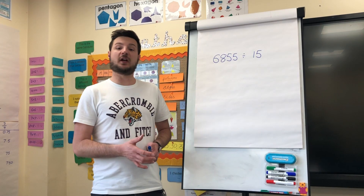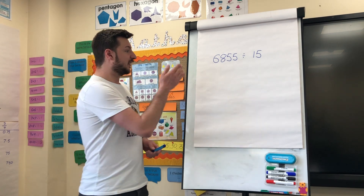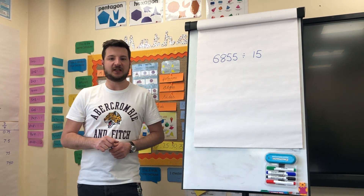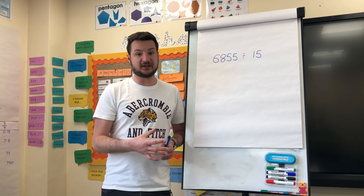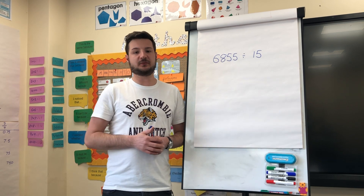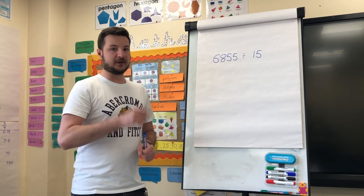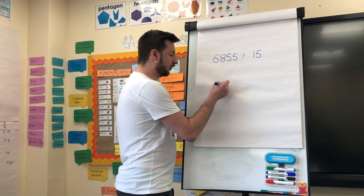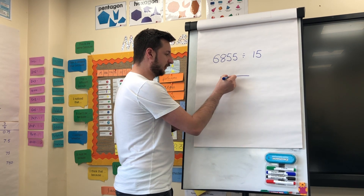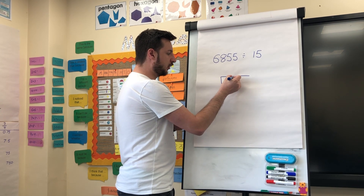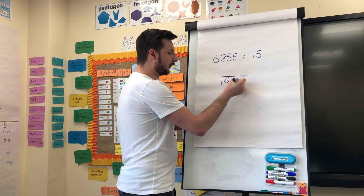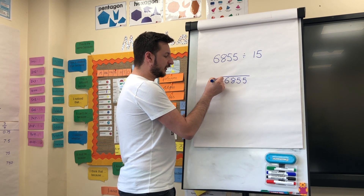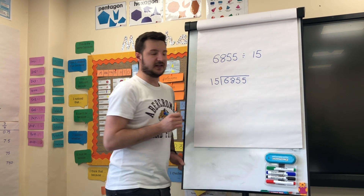Here is the first question we're going to go through together: 6,855 divided by 15. Now although we've got our steps to success, there are two things we need to do before we get to that point. Step one is to write out our question using the formal long division method. We put our dividend — the number we are dividing — on the inside of our bus stop, and the divisor on the outside.